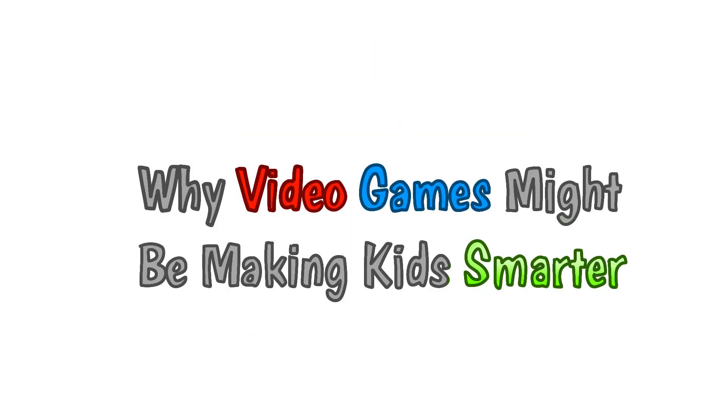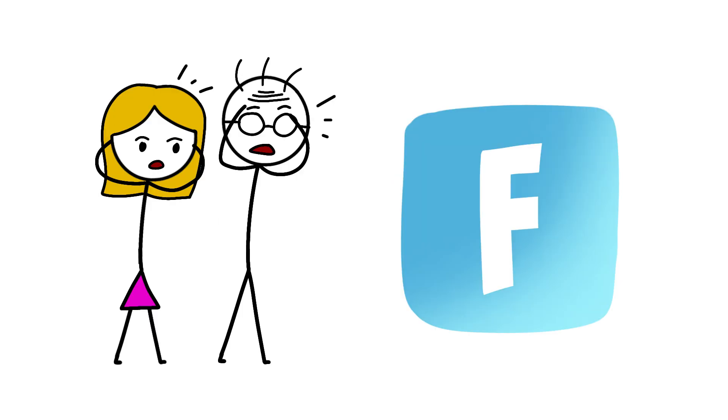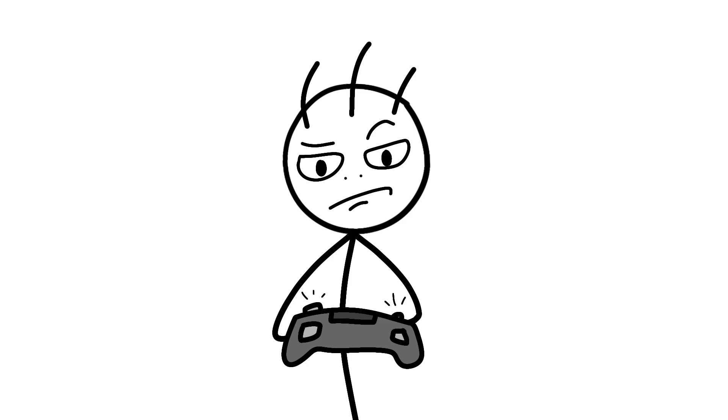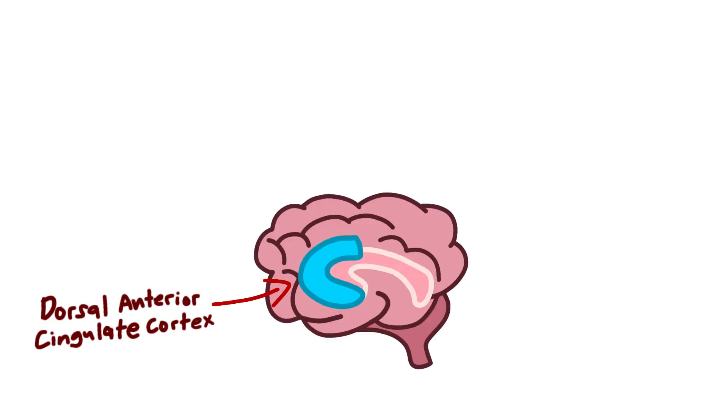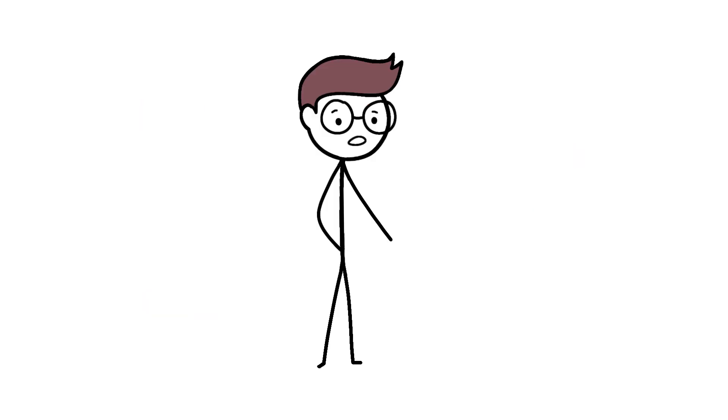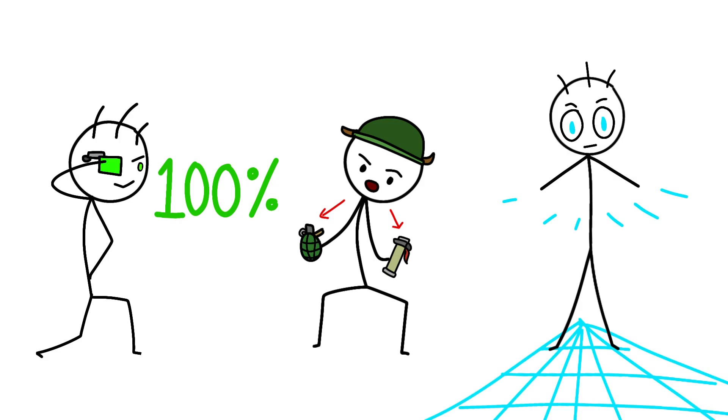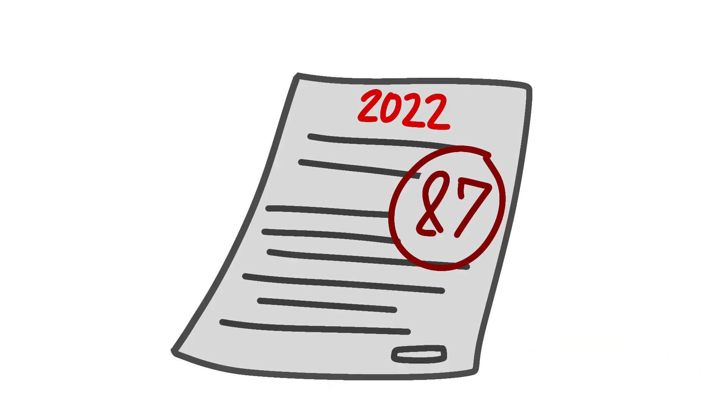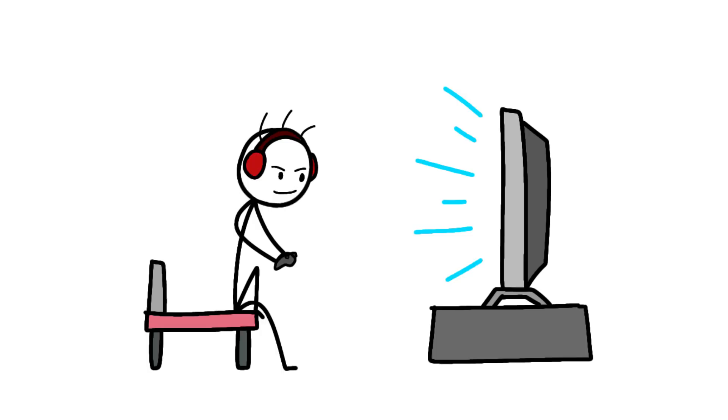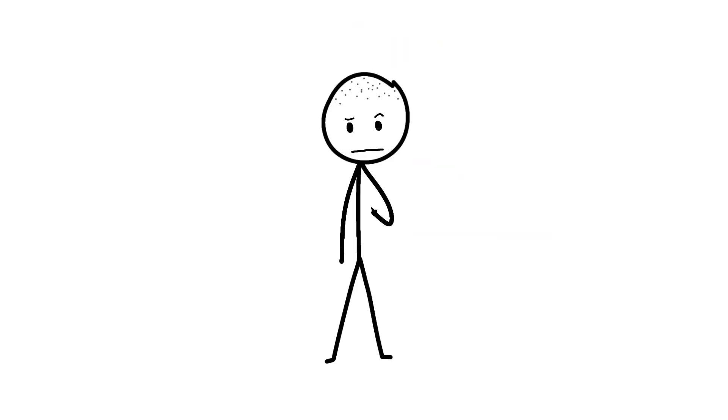Why video games might be making kids smarter? Parents panicking about Fortnite might want to sit down for this one. Action video game players show enhanced activity in the dorsal anterior cingulate cortex, superior frontal sulcus, and middle frontal gyrus. In normal people words, better attention, faster decision-making, and enhanced spatial reasoning. A 2022 meta-analysis of 87 studies found that kids who played video games for 3-plus hours daily scored higher on cognitive tests than non-gamers.